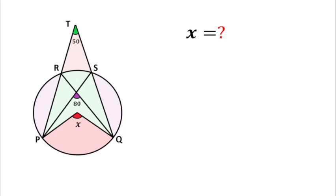Welcome to Definite Mind. In this question, we have to find the red angle, which is angle x. It is given that the purple angle is 80 degrees and the green angle is 50 degrees.